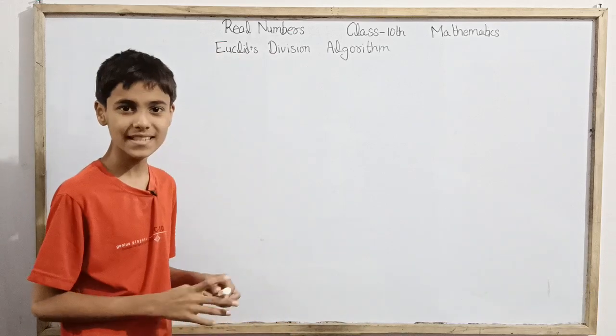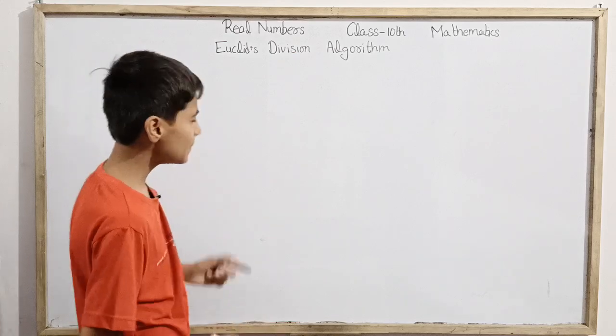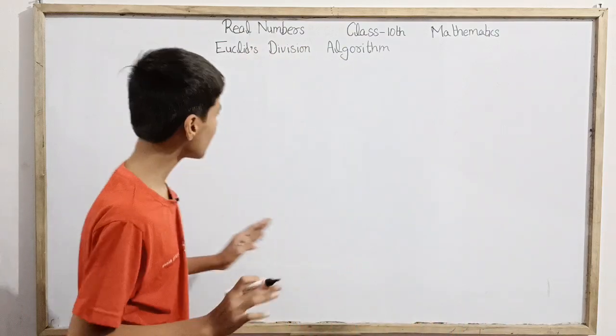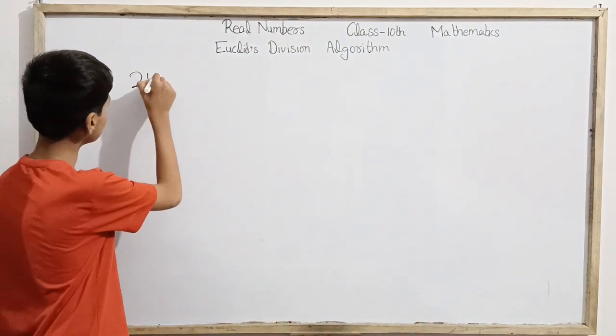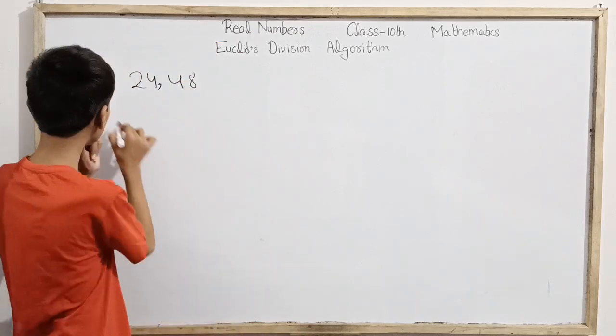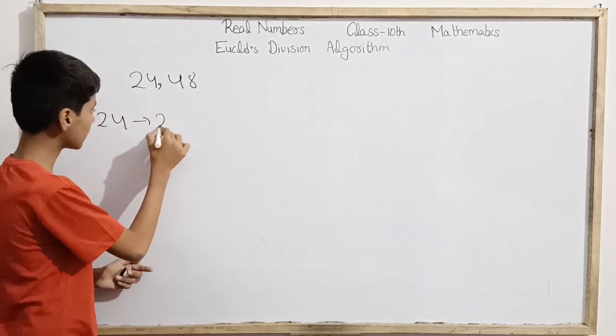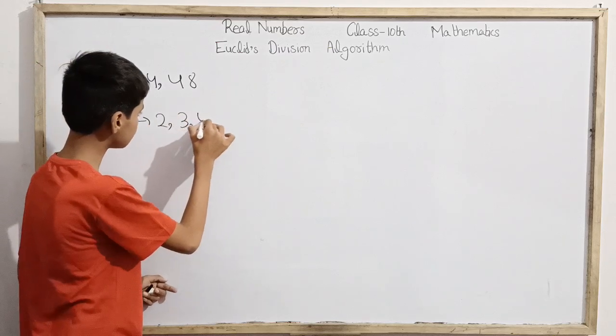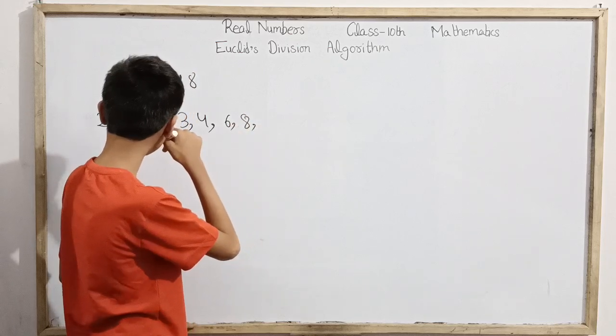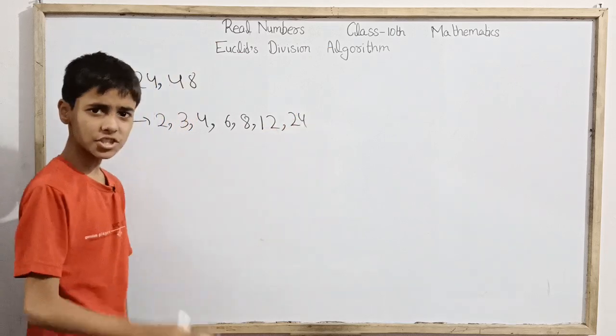Before discussing the algorithm, let me tell you about common divisors and common factors. We have two numbers, 24 and 48. For 24, the divisors are 1, 2, 3, 4, 6, 8, 12, and 24. For 48, divisors are 1, 2, 3, 4, 6, 8, 12, 24, and 48.